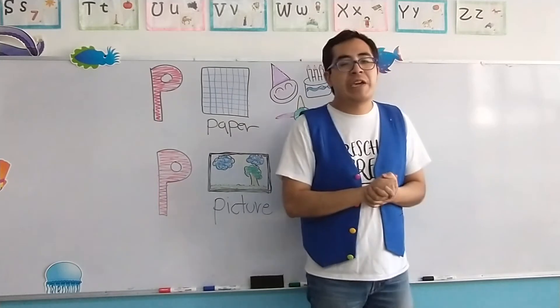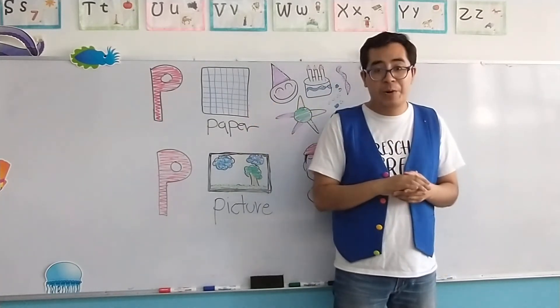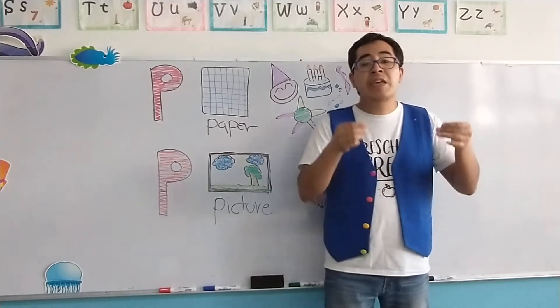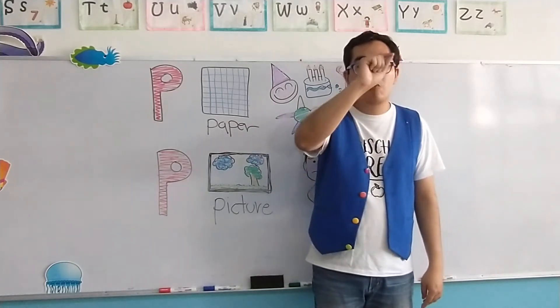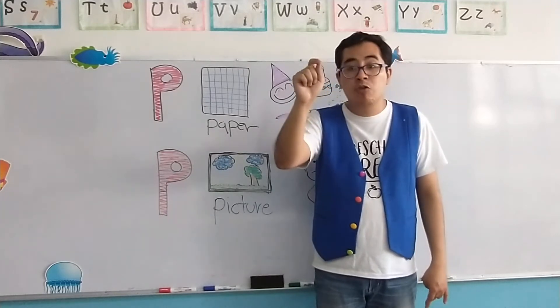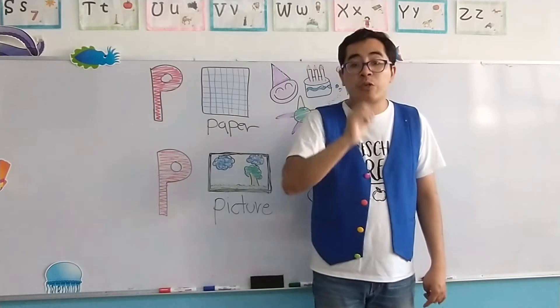For capital P, we have the first object, which is paper. Now, the paper is the object in which you, my children, you write, you take your notes, you do your homework, or you do your own drawings.